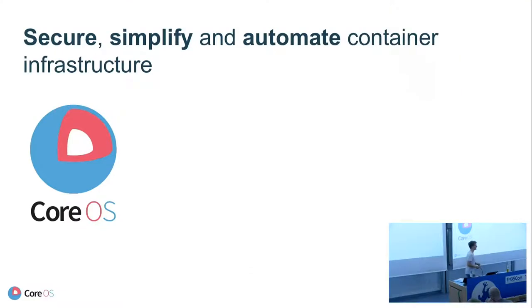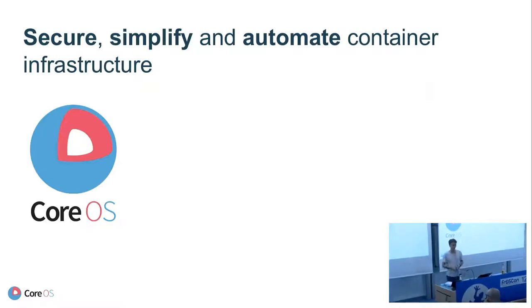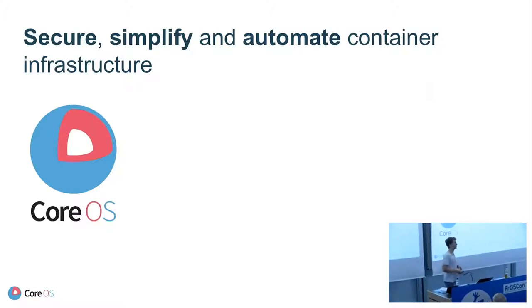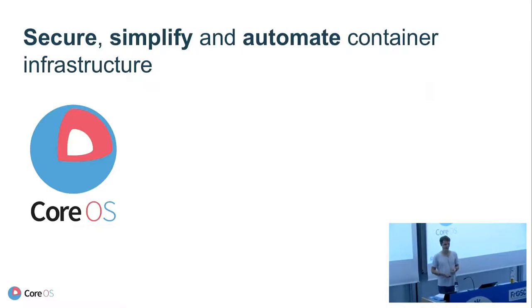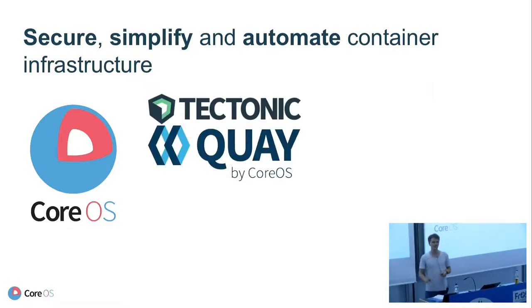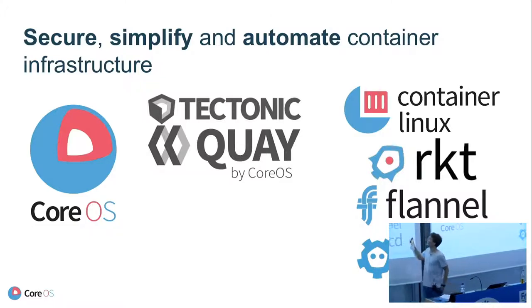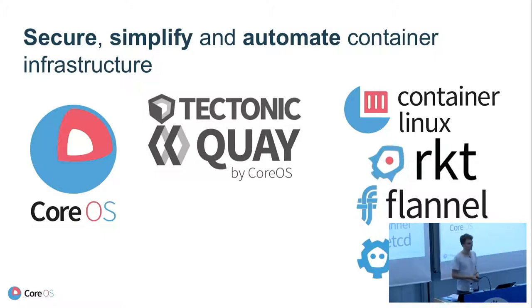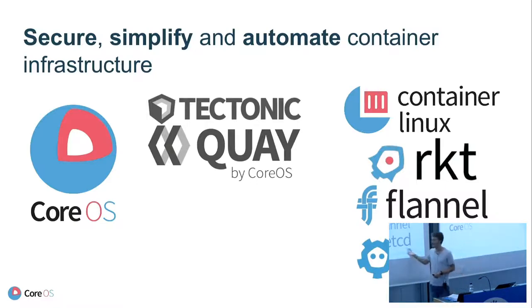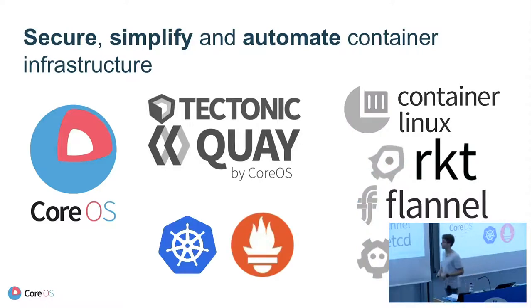Why is somebody from CoreOS standing up here, and what does CoreOS have to do with containers and Kubernetes? CoreOS is a company in San Francisco, also based in New York and Berlin. What we do is we secure, simplify, and automate container infrastructure. We have enterprise products, but I want to touch briefly on our open source projects: Container Linux as a minimal Linux distribution, Rocket as a container engine — an alternative to Docker — Flannel as an overlay network, and etcd as a database, which is now pretty much the brain of Kubernetes.